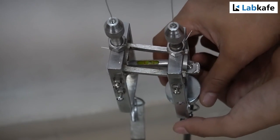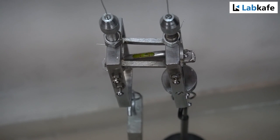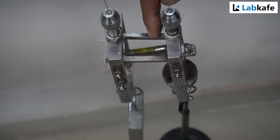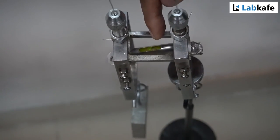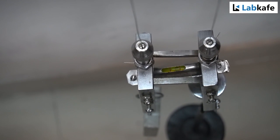So to do so, I will rotate the spherometer screw. Now you can see the bubble is just touching to the reference line on the spirit level.